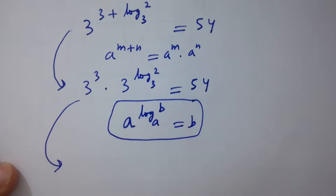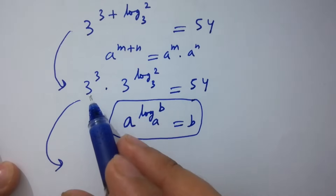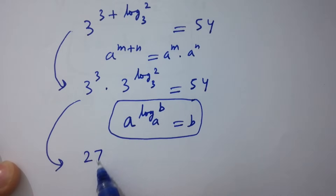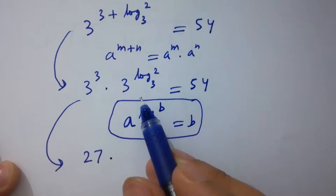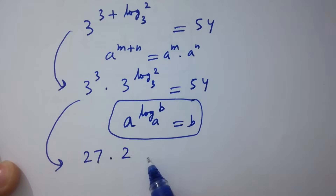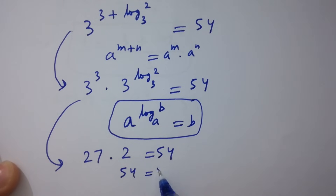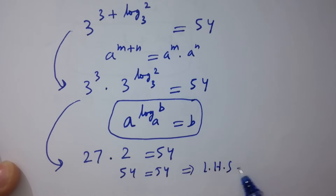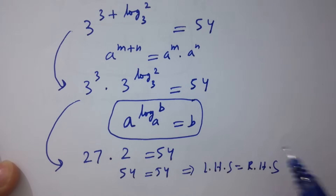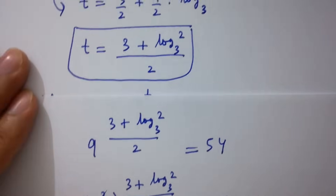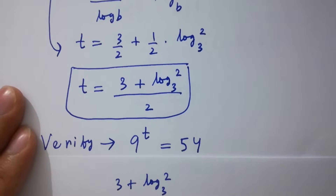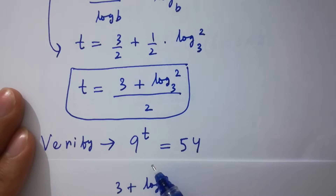Finally, 3 times 3 is 9, and 9 times 3 is 27, times 3 to the power log 2 to the base 3 which equals 2, giving 27 times 2 equals 54. Here 27 times 2 is 54, equal to 54 — left hand side equals right hand side, which shows that the value of t satisfies the equation 9 to the power t equals 54.